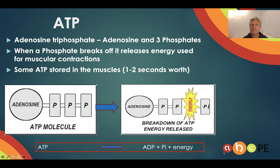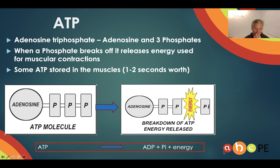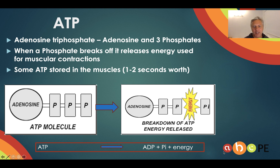So what's ATP? Adenosine triphosphate is made up of an adenosine and three phosphate molecules, as you can see in the diagram. When one breaks off, energy is released and that energy produces a muscular contraction. We've only got a very limited supply in the body. You can see a formula at the bottom: ATP gets broken down to ADP — adenosine diphosphate, meaning two — and a Pi or an inorganic phosphate, and that gives us some energy.